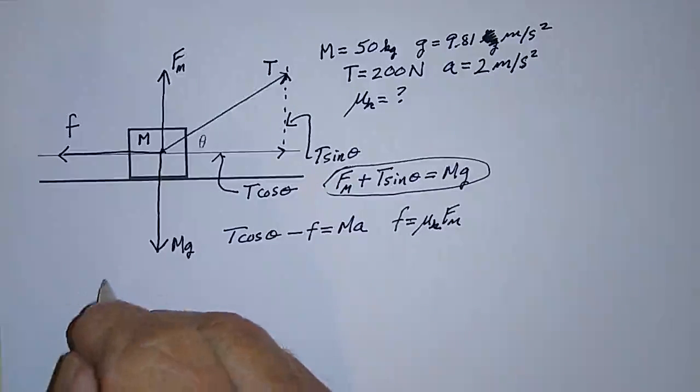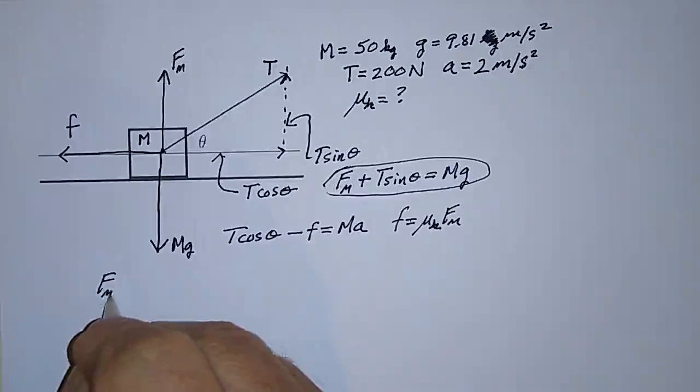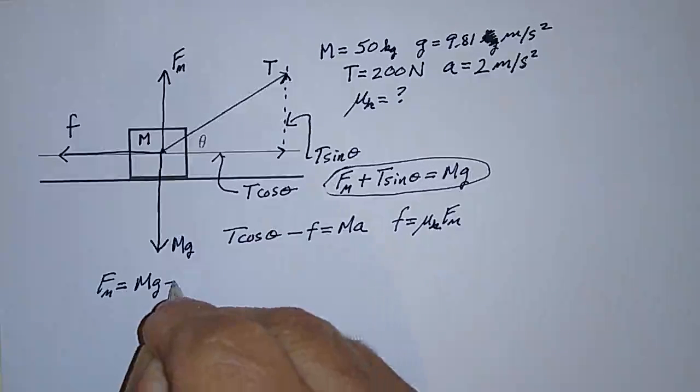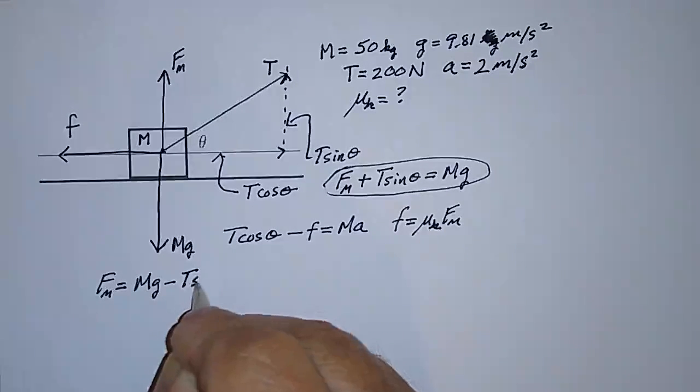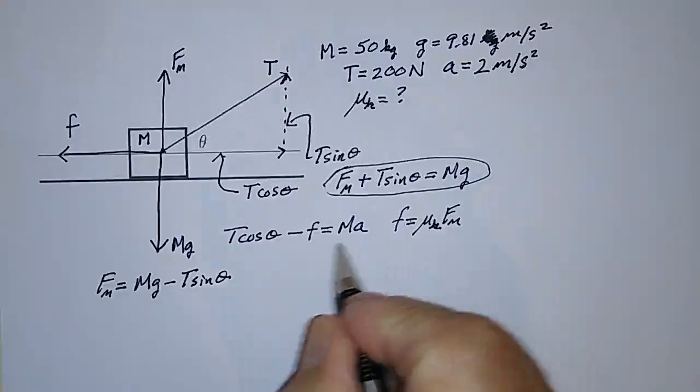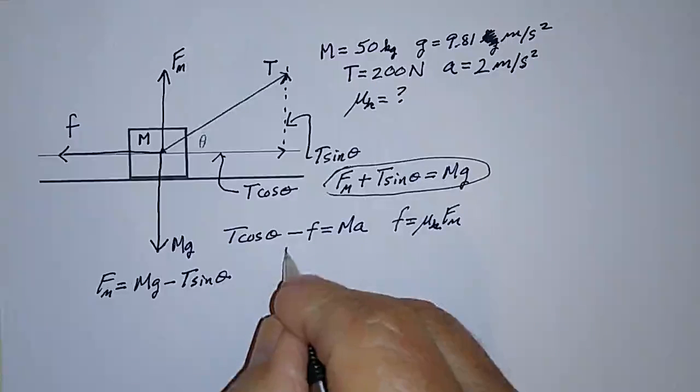Let me write it over here. F normal is just equal to Mg minus T sine theta.